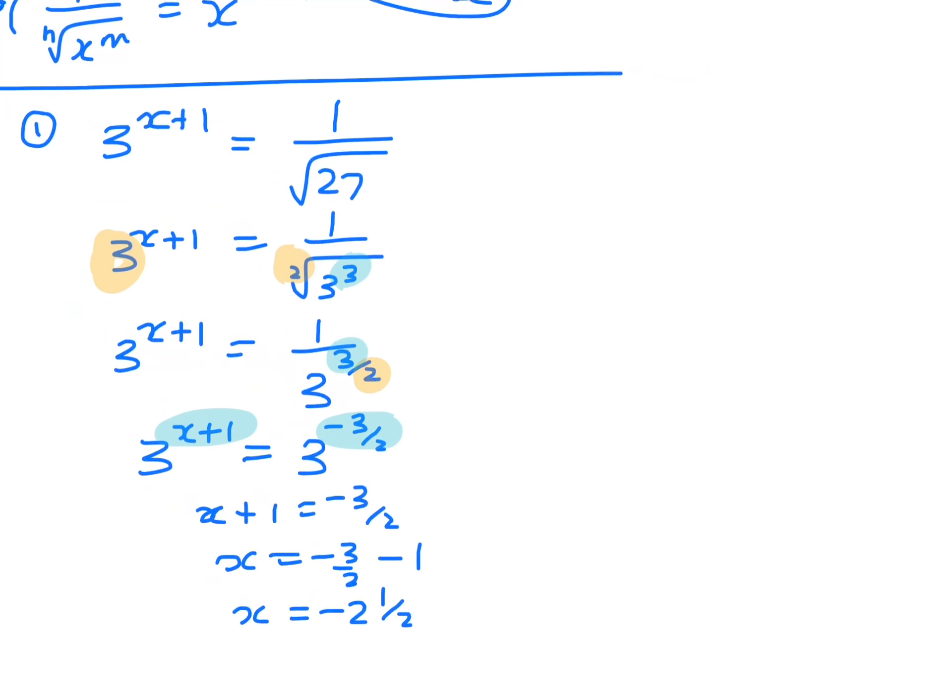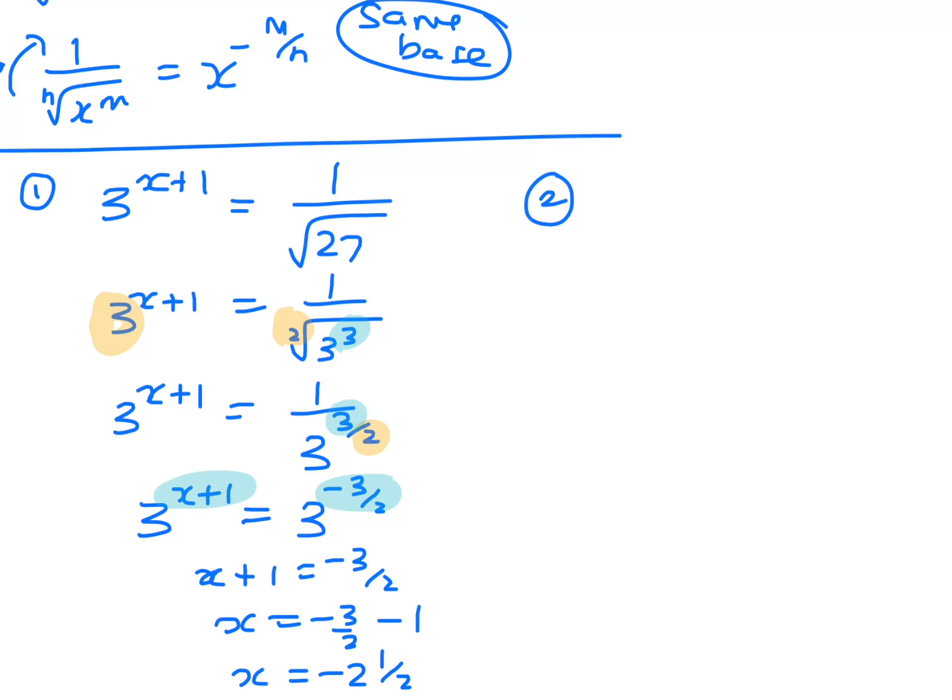So let's just have a look at another one. I'm going to make this a little bit trickier. So I go 4 to the x plus 1, just so you get the idea, equals 1 over the cube root of, let's go for 32.